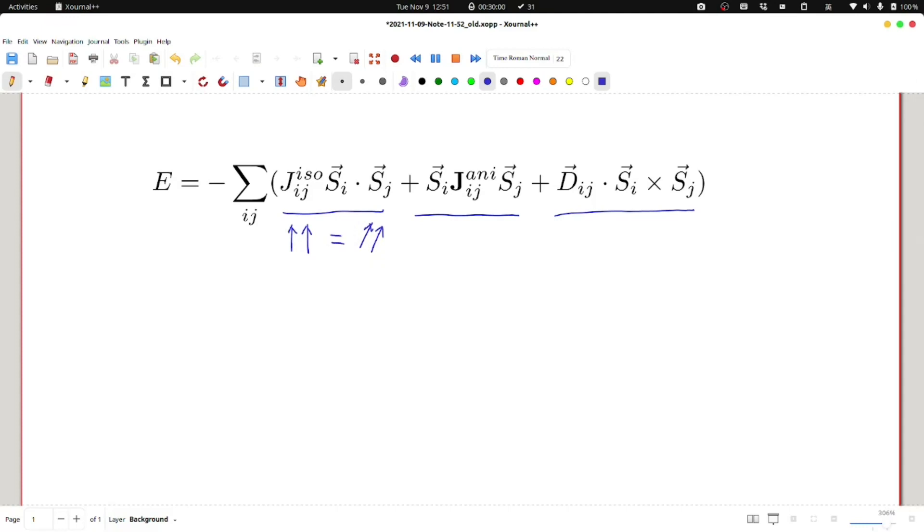The second term is called anisotropic because they will give a different energy. The parameter for the anisotropic exchange is a tensor, so the second term can be written as a vector matrix vector multiplication.